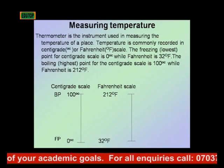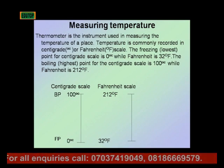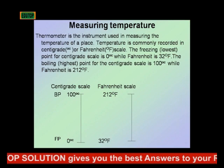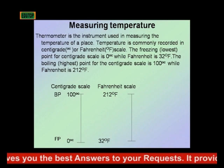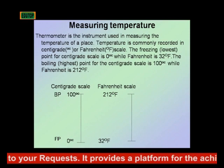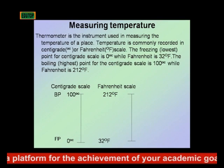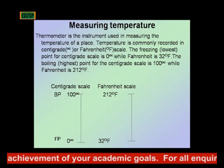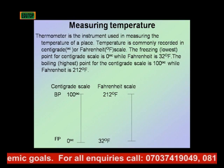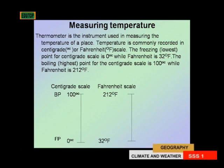These are the two scales commonly used to record temperature. The freezing point for the centigrade scale is 0 degrees Celsius, while in Fahrenheit the freezing point is 32 degrees Fahrenheit. For the boiling point, which is also called the highest point, the centigrade scale is 100 degrees Celsius, and in Fahrenheit it is 212 degrees Fahrenheit.